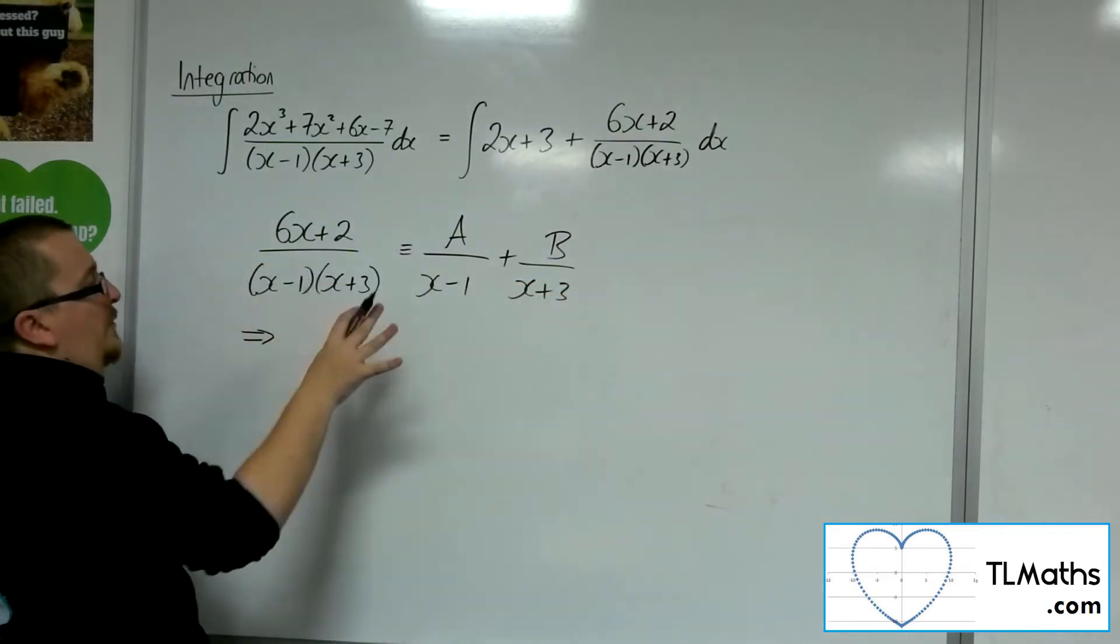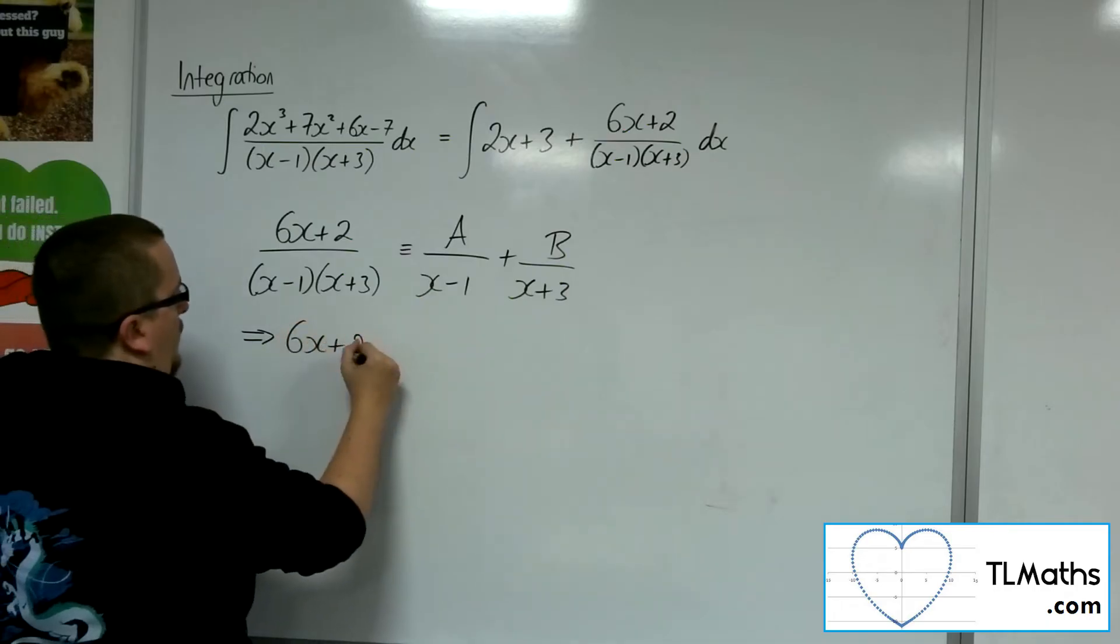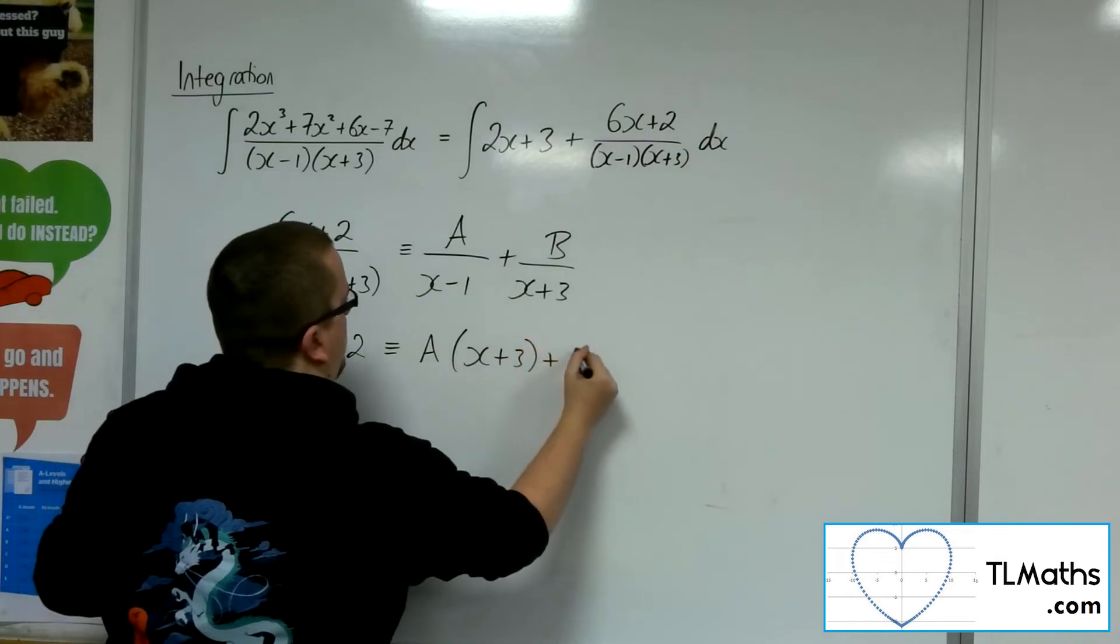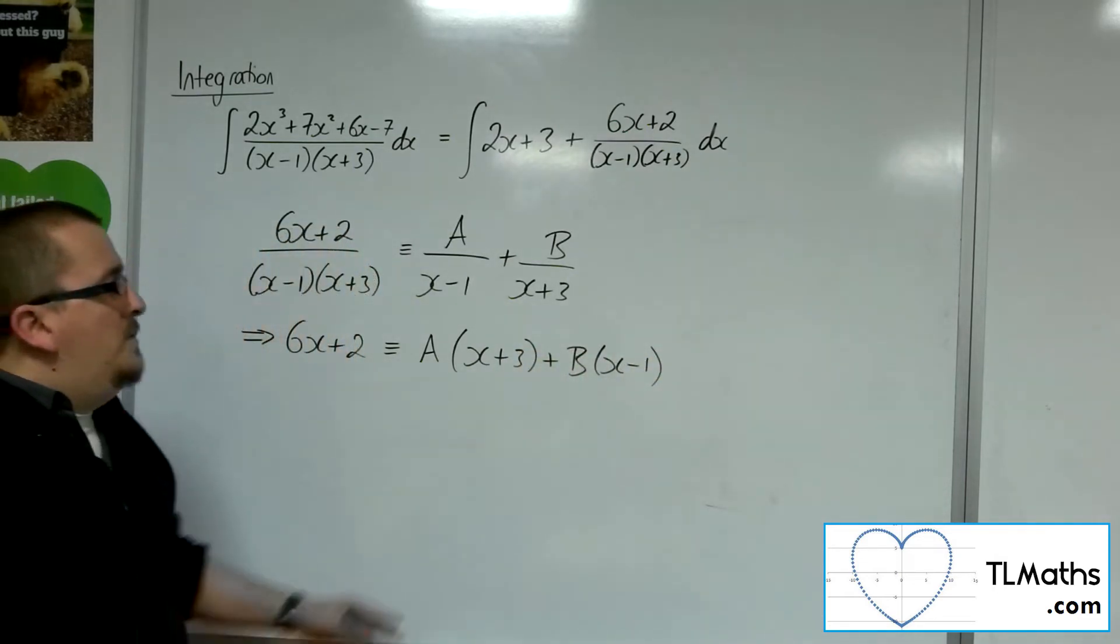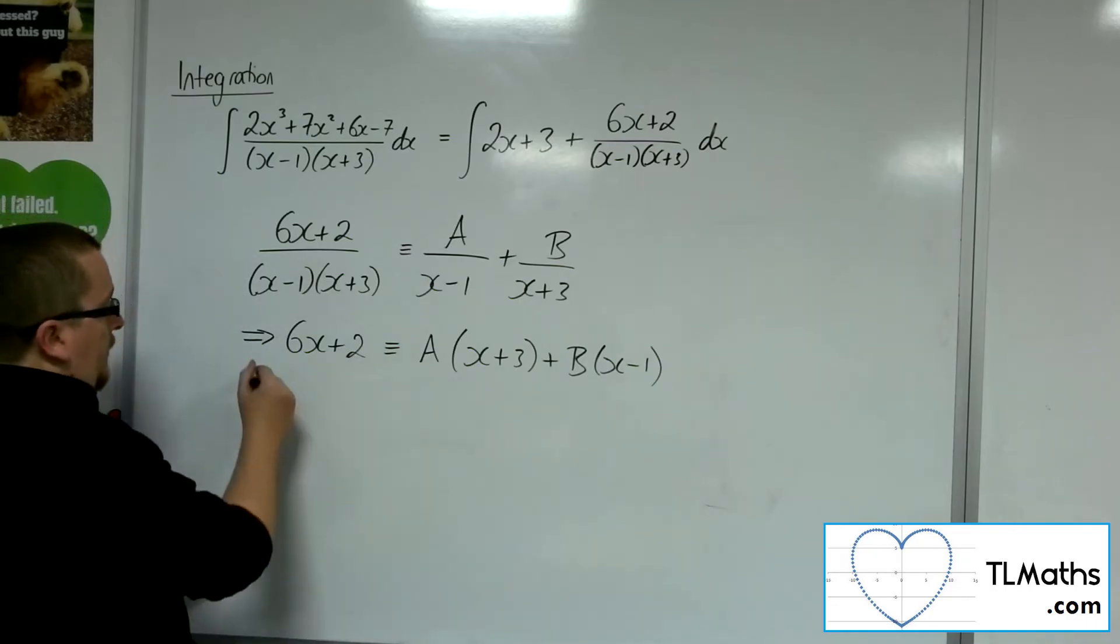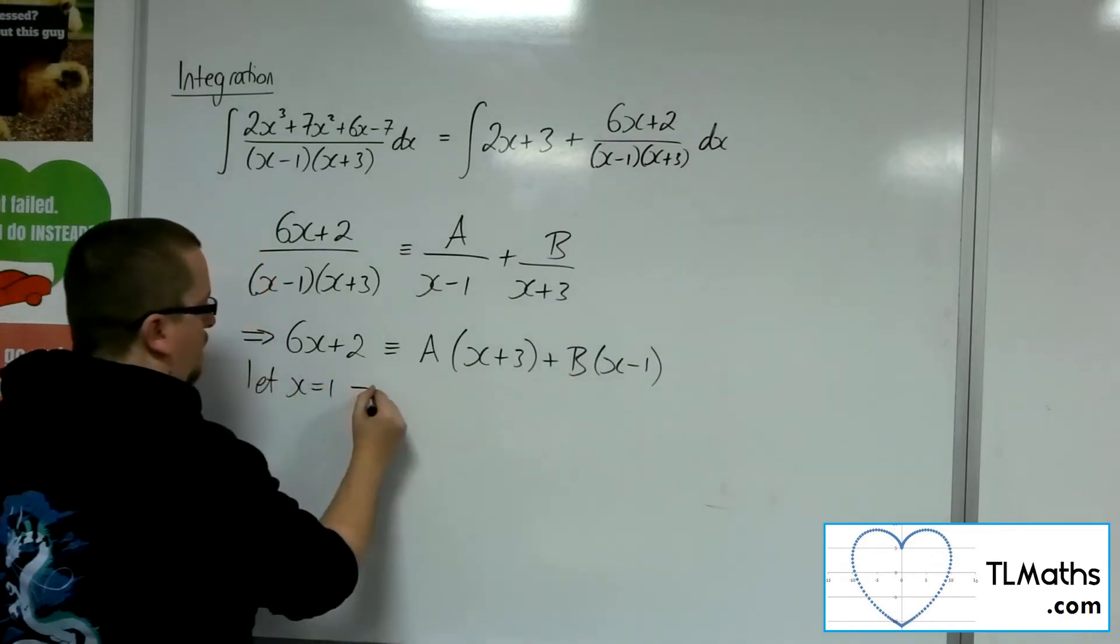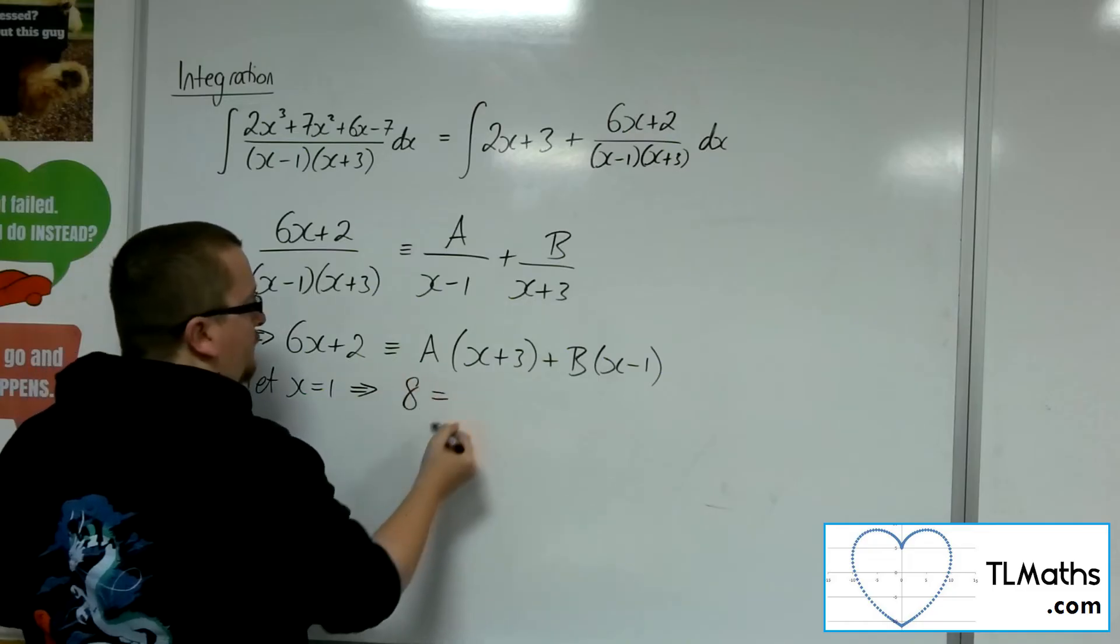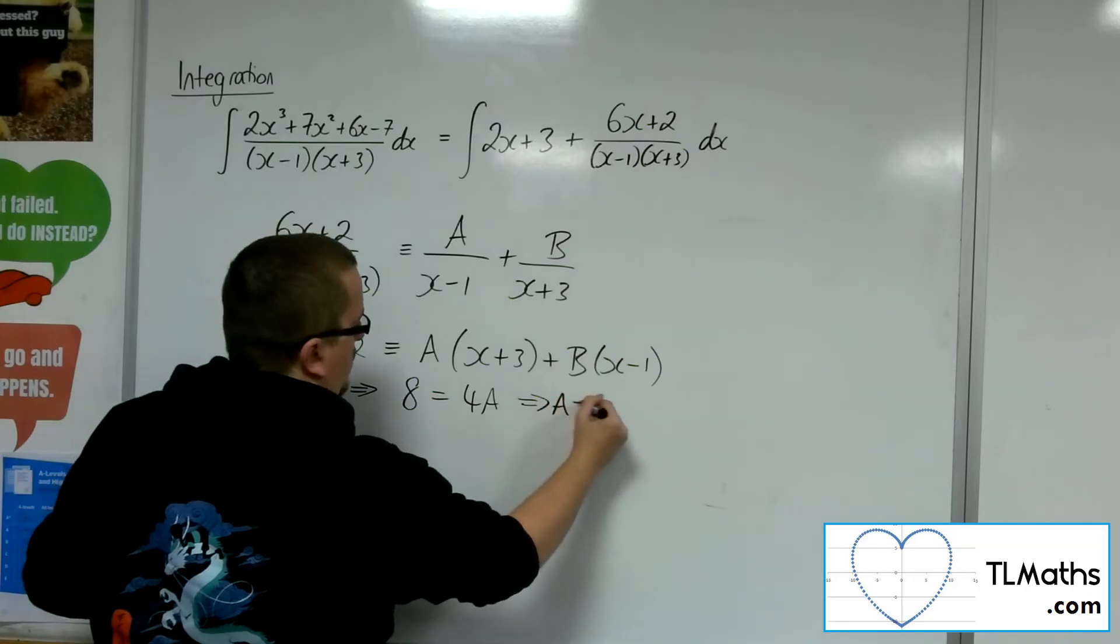So multiplying both sides by the x minus 1, x plus 3, we'll get 6x plus 2 is equivalent to A lots of x plus 3 plus B lots of x minus 1. So now we can choose values of x to substitute in to knock out those brackets. So if we let x be 1 to knock out that bracket, we'll have 6 lots of 1 plus 2, which is just 8, is 1 plus 3, so 4 lots of A. So that means that A is 2.